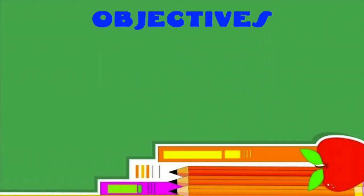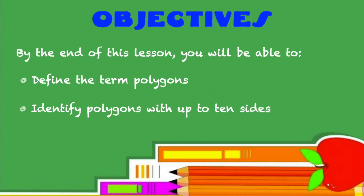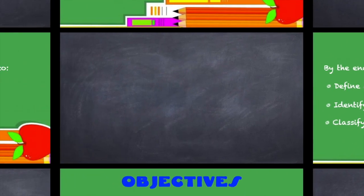Let's look at today's objectives. By the end of this lesson, you will be able to define the term polygons, identify polygons with up to 10 sides, and classify polygons as regular or irregular.